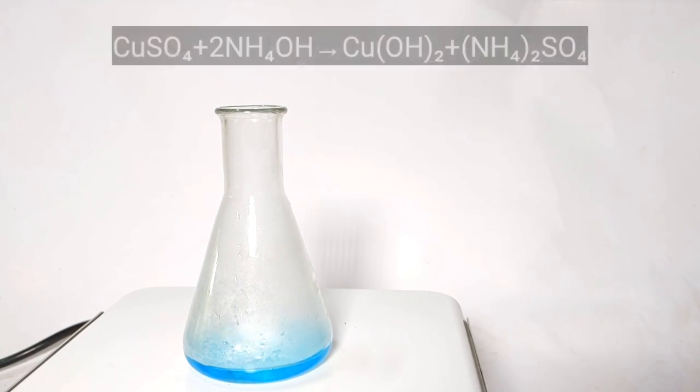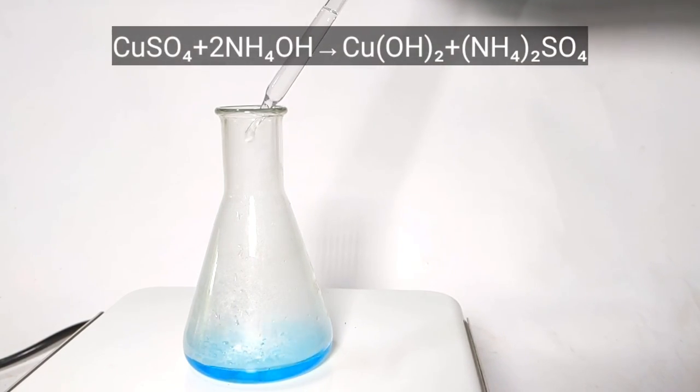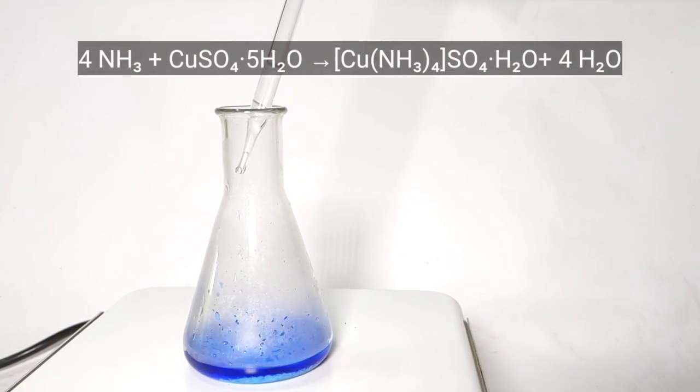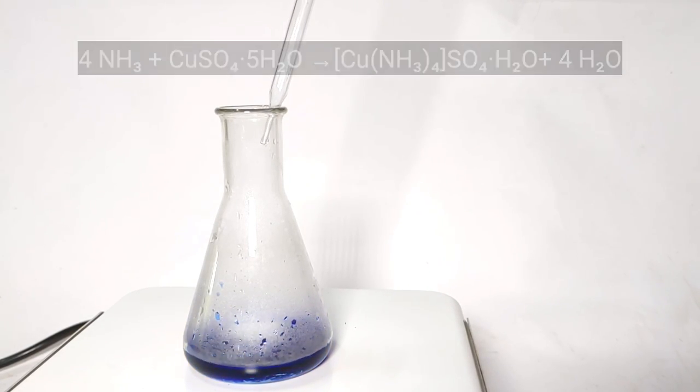Initially when adding the ammonia solution, pale blue colored precipitate of copper hydroxide is formed. But when ammonia becomes in excess, everything clears up and the solution turns deep blue, forming the tetramine complex.